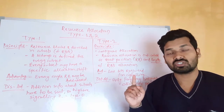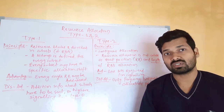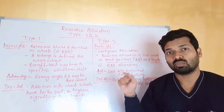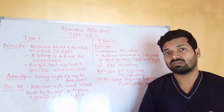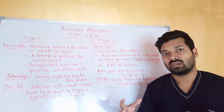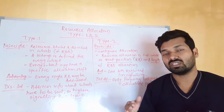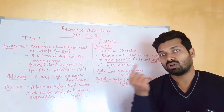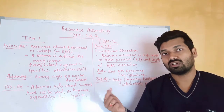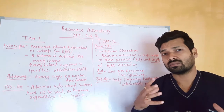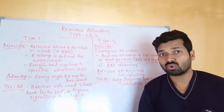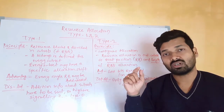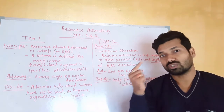In resource allocation type 0, we used to address one bitmap per resource block group. So we are saving signaling resources, because earlier we needed to address one bit for every resource block. In PDSCH allocation type 0, we achieved addressing resource block groups with one bitmap.